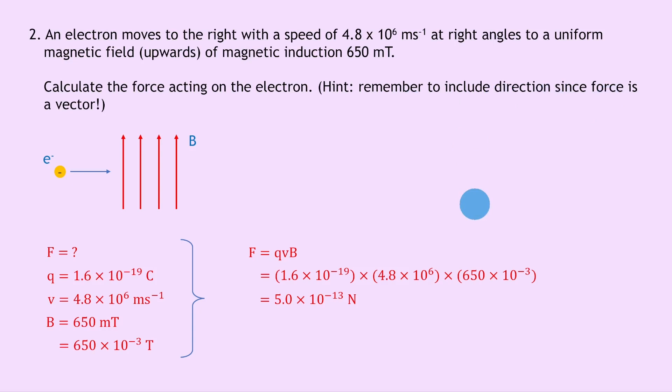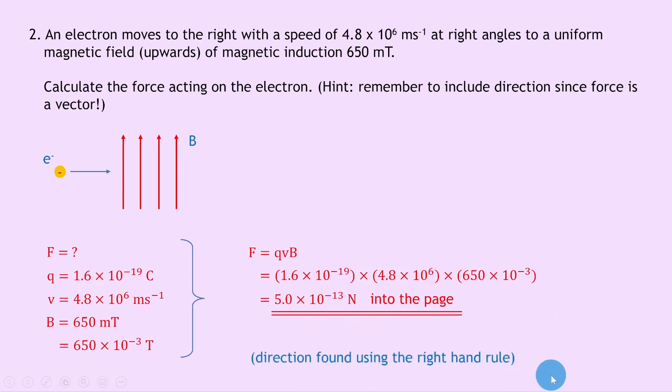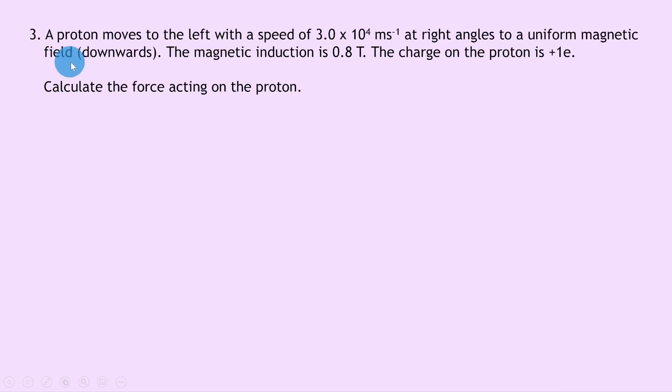Now we need the direction because force is a vector. Using the right-hand rule: point your index finger towards the top of the page, move your hand so your middle finger points to the right — your thumb then points into the page. So the direction is into the page. Final answer: 5.0 times 10 to the minus 13 newtons into the page, found using the right-hand rule.